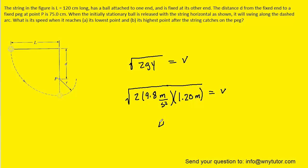Once we simplify that, we get approximately 4.85 meters per second. This is the speed of the object as it reaches its lowest point and is therefore the correct answer to part A.